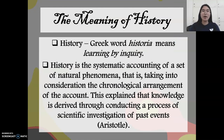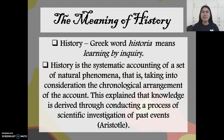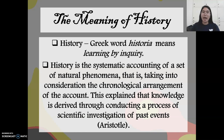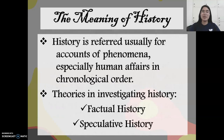First, what do we mean by history? According to Aristotle, it is the systematic accounting of a set of natural phenomena that takes into consideration the chronological arrangement of the account, meaning there is a series of events that happened in the past. This explains that knowledge is derived through conducting a process of scientific investigation of past events. It came from the Greek word 'historia,' which means learning by inquiry. It usually accounts for phenomena, especially in chronological order of events.